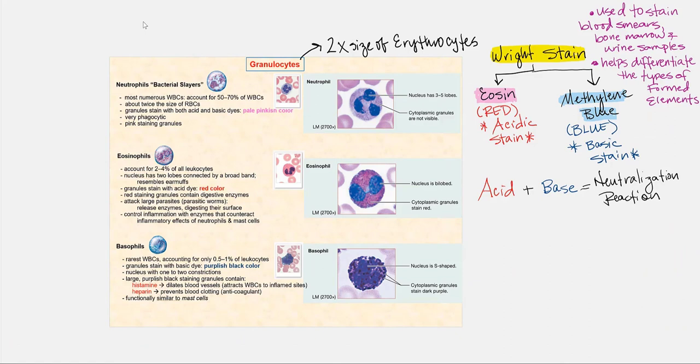Now let's look at the different types of granulocytes, beginning with the neutrophils. These neutrophils are sometimes referred to as bacterial slayers because that is their specialty — they neutralize bacteria potentially trying to make us sick. Neutrophils account for most of the leukocyte population at 50 to 70 percent, and they are twice the size of your red blood cells. Their granules will stain pink.